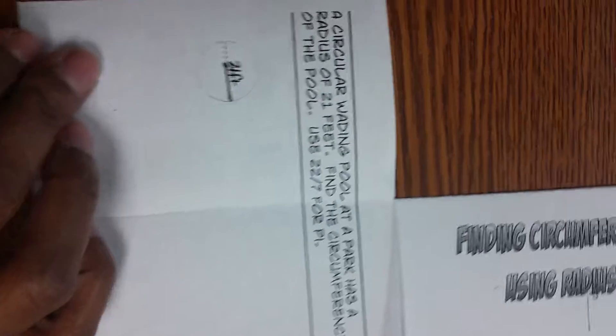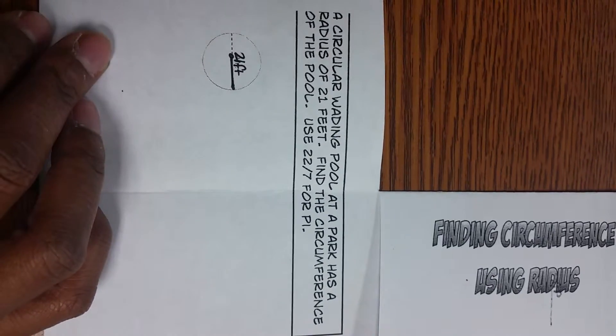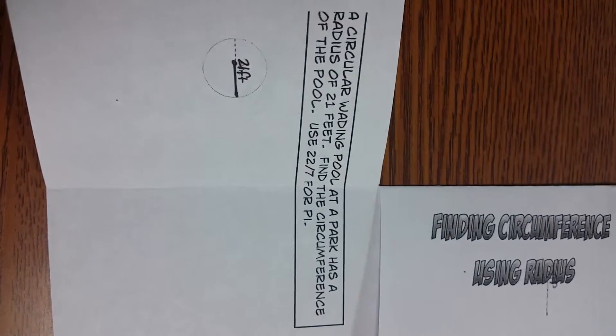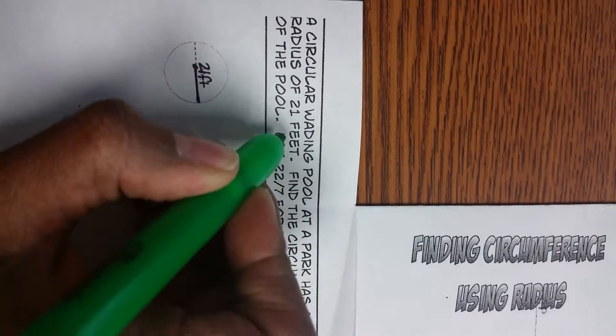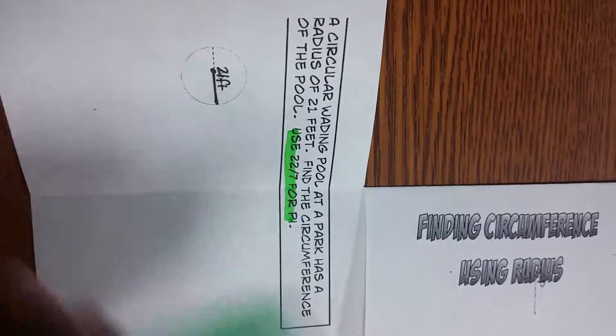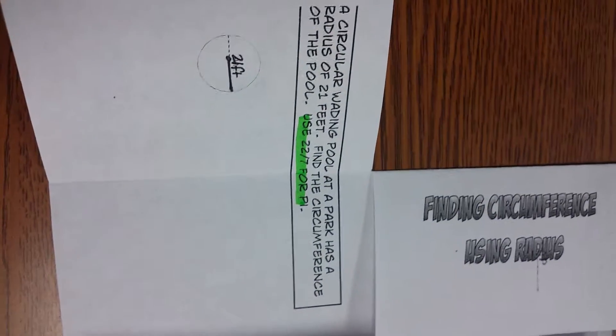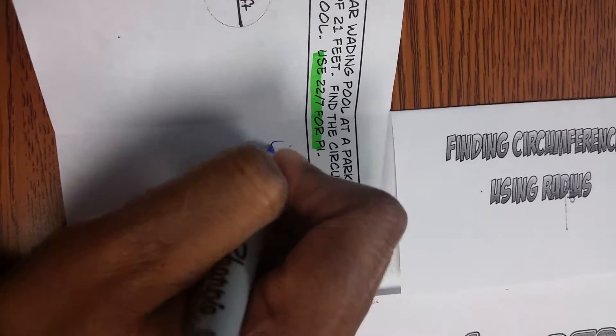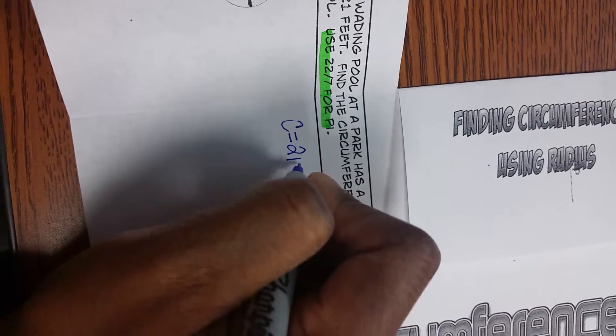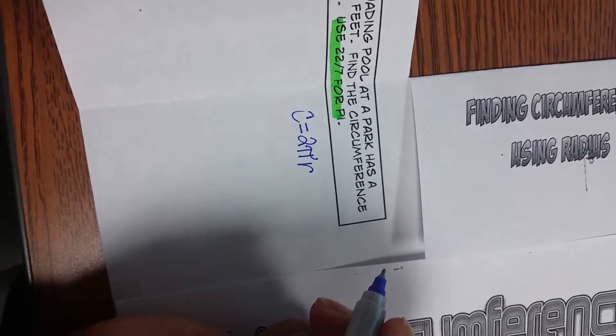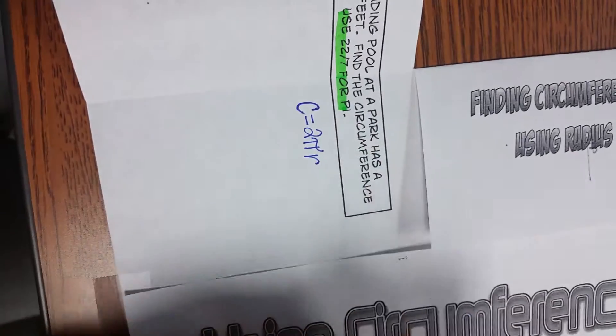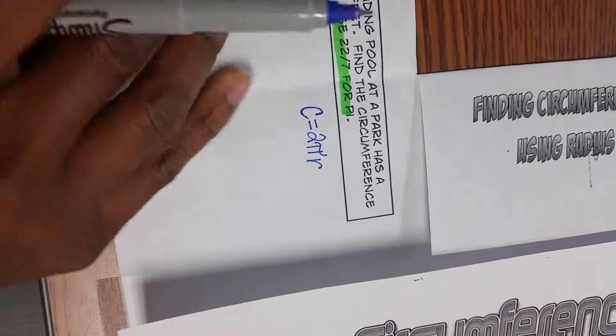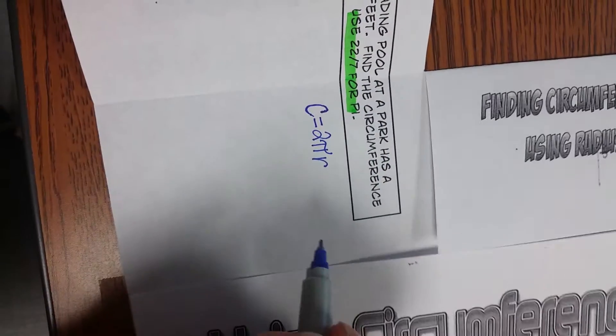It says a circular wading pool at a park has a radius of 21 feet. Find the circumference of the pool. But we're going to use 22 over 7 for pi instead of 3.14. Now our formula for circumference is c equals 2 pi r. In this instance we're going to use this one. We know there's another formula of pi times diameter, but since we're given the radius, we're going to use the one with the radius.